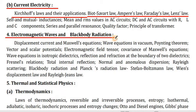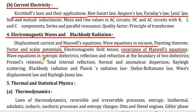Point 4 — Electromagnetic Waves and Black Body Radiation: displacement current, Maxwell's equations, wave equation in vacuum, Poynting's theorem, vector and scalar potentials, electromagnetic field tensors, covariance of Maxwell's equations, wave equations in isotropic dielectrics, reflection and refraction at the boundary of two dielectrics, Fresnel's relations, total internal reflection, normal and anomalous dispersion, Rayleigh scattering, black body radiation and Planck's radiation law, Stefan-Boltzmann law, Wien's displacement law, and Rayleigh-Jeans law.